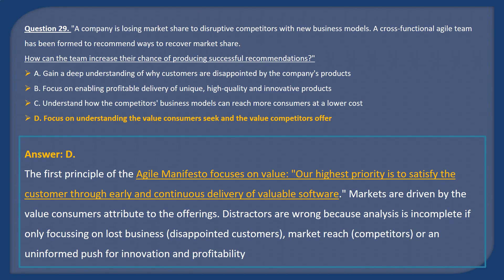Answer D. The first principle of the Agile manifesto focuses on value: our highest priority is to satisfy the customer through early and continuous delivery of valuable software. Markets are driven by the value consumers attribute to their offerings. Distractors are wrong because analysis is incomplete if only focusing on lost business, disappointed customers, market-rate competitors, or an uninformed push for innovation and profitability.